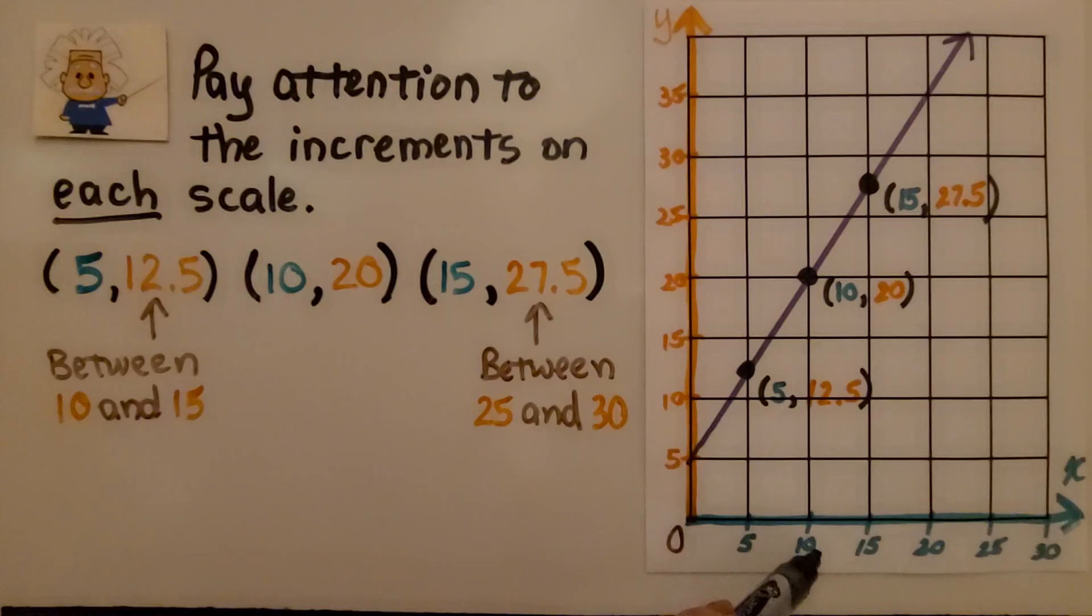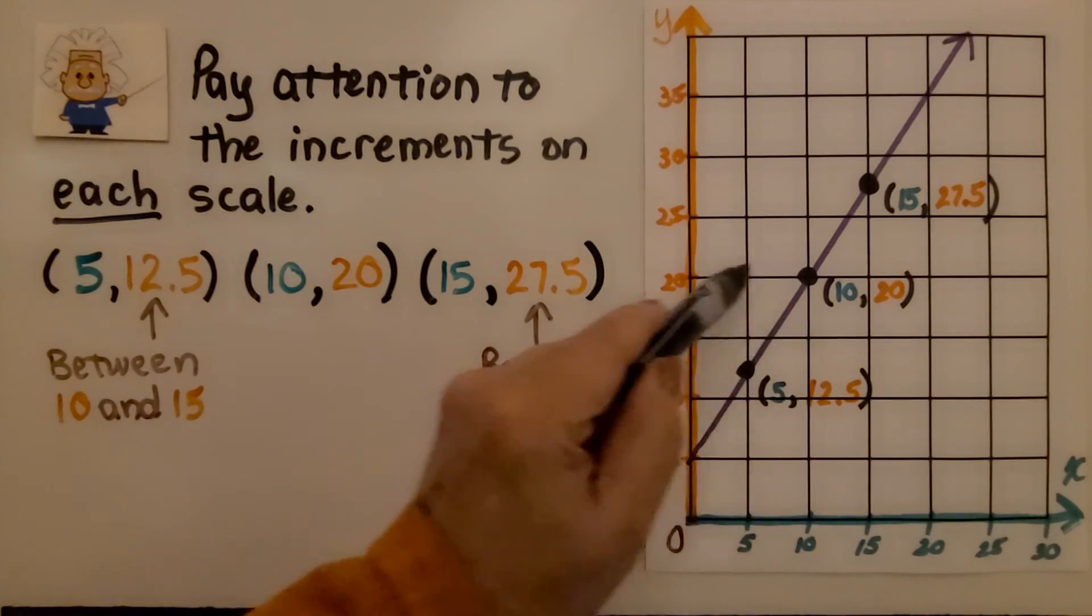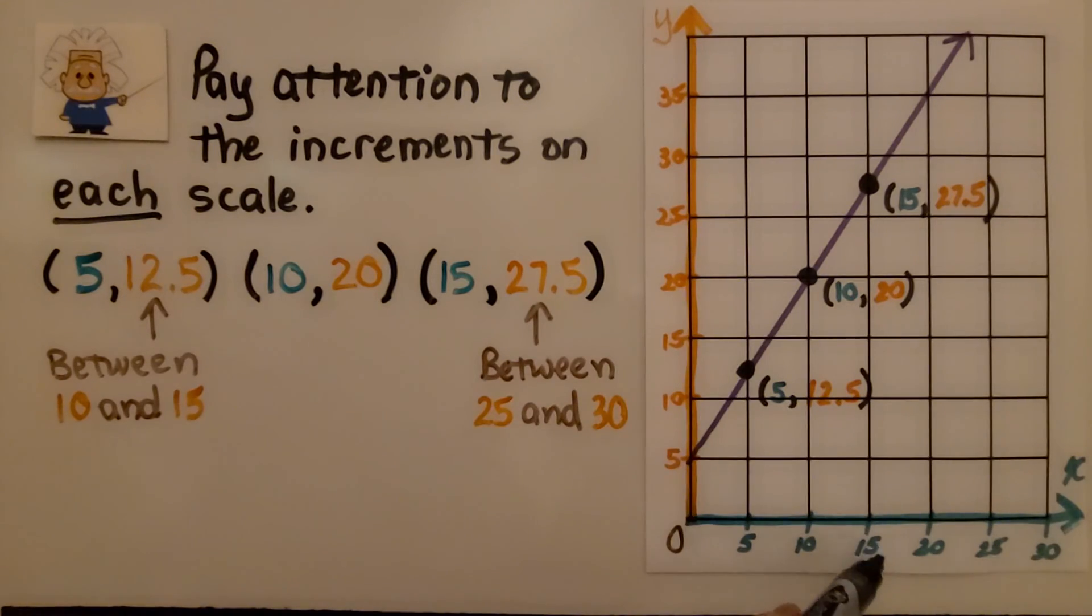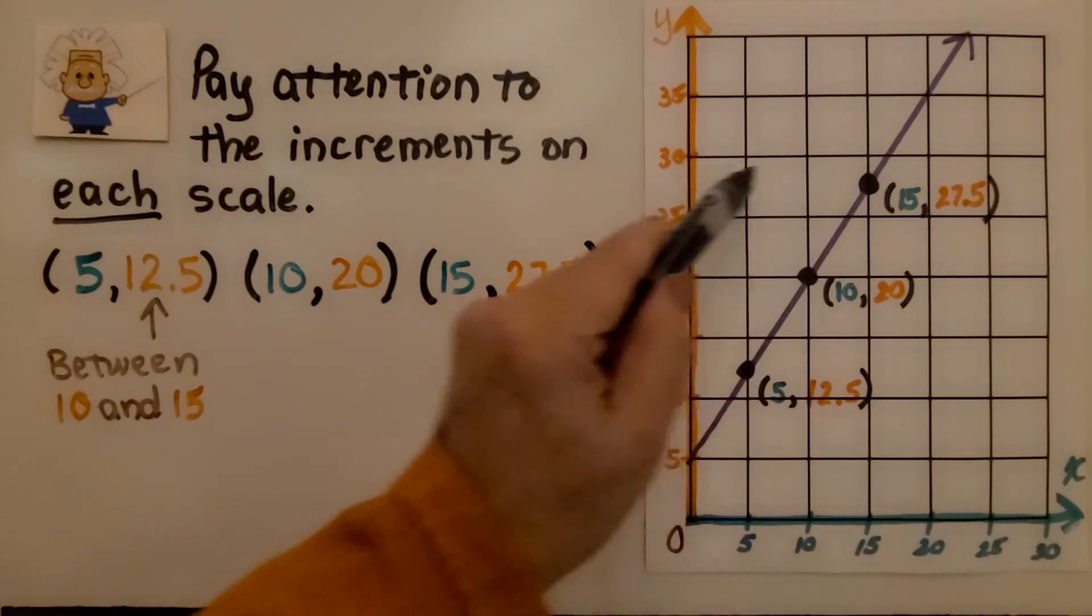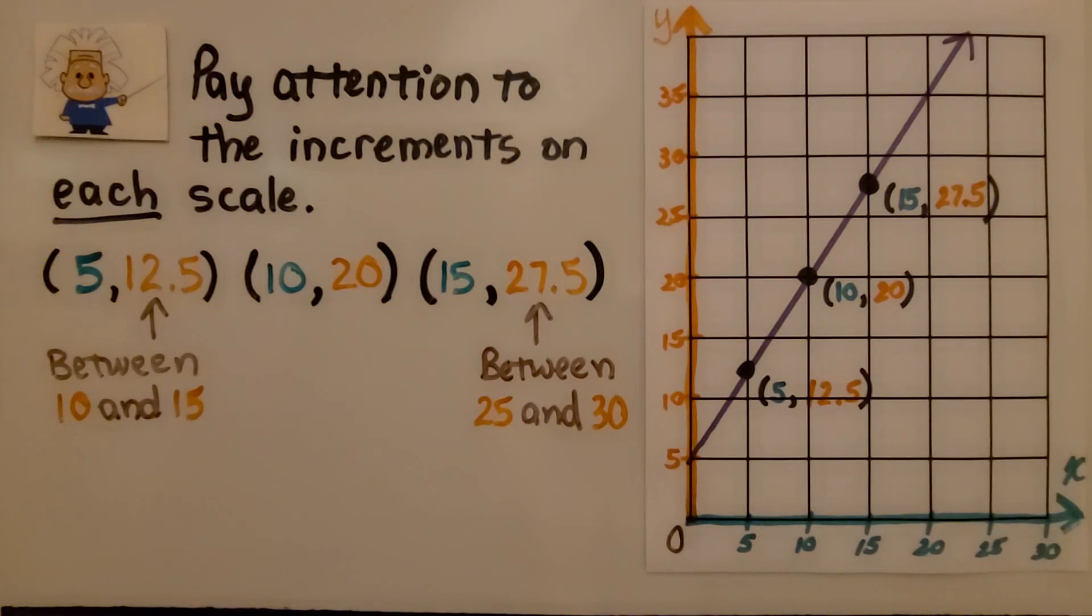Then we have one that's easy, because it's on the cross of the grid, so we know it's 10 for x, 20 for y. But then this one is on 15 for x, and in between 25 and 30, which means we can say it's 27.5 for y.